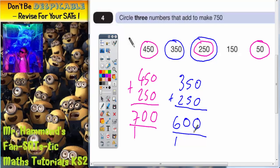So that makes 600. Now, to get up to 750, we would need 150, which is here.